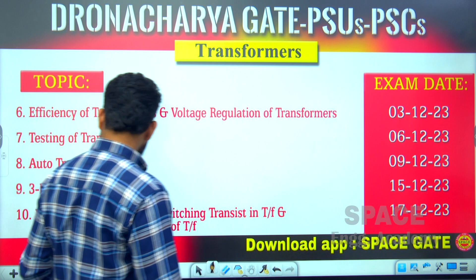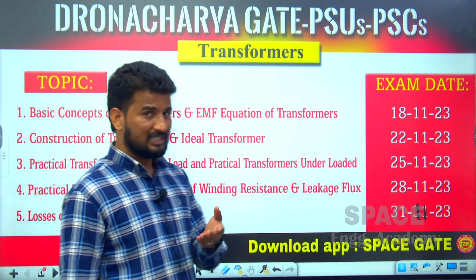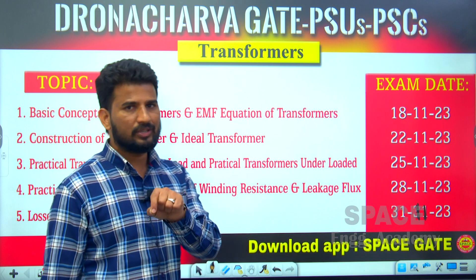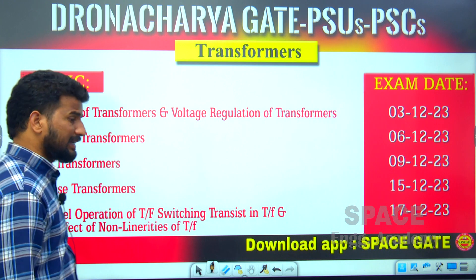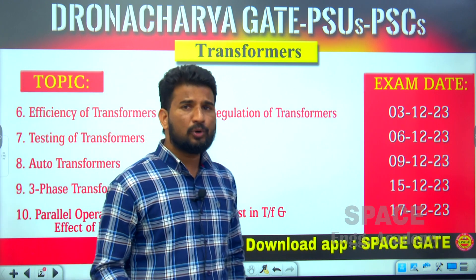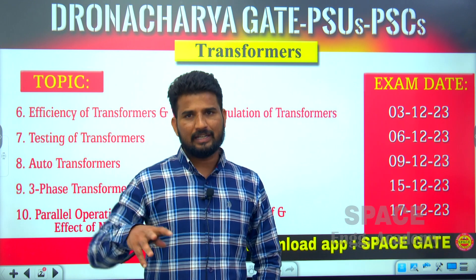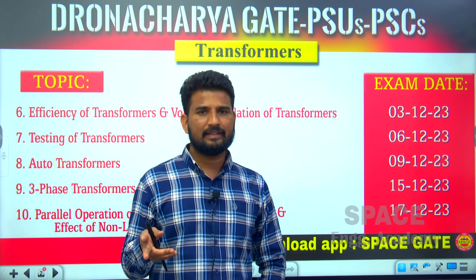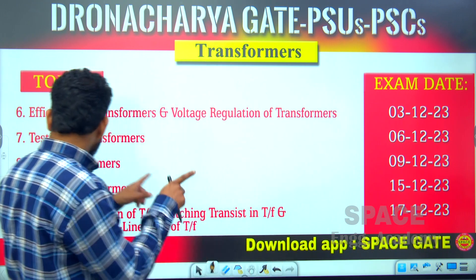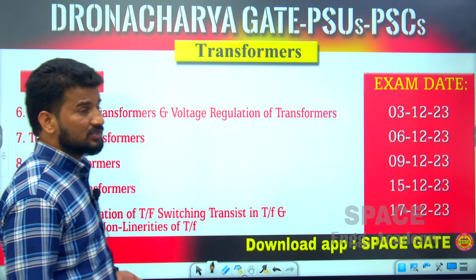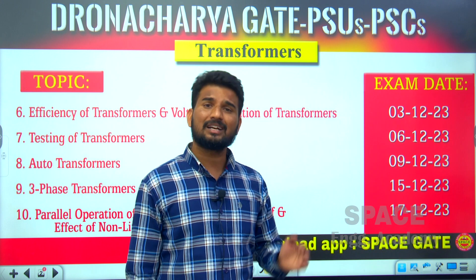I also want to mention losses: there are core losses and copper losses. Transformer losses are not only eddy current and hysteresis — copper loss is also important. In simple terms, there are two types of losses: copper loss and core loss. When both are equal, you get maximum efficiency. These are the conditions you will understand once you revise everything completely.